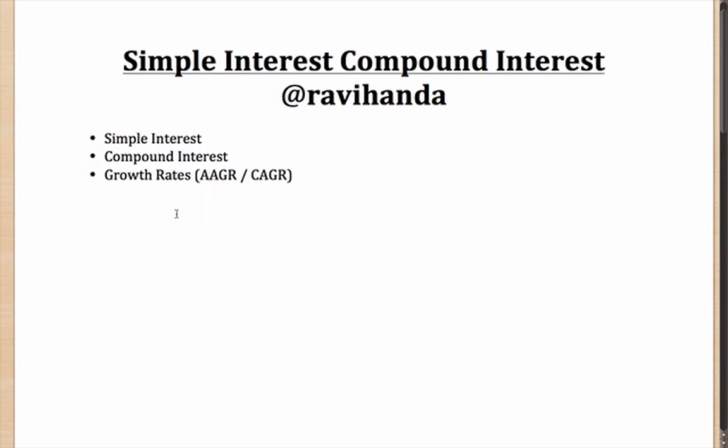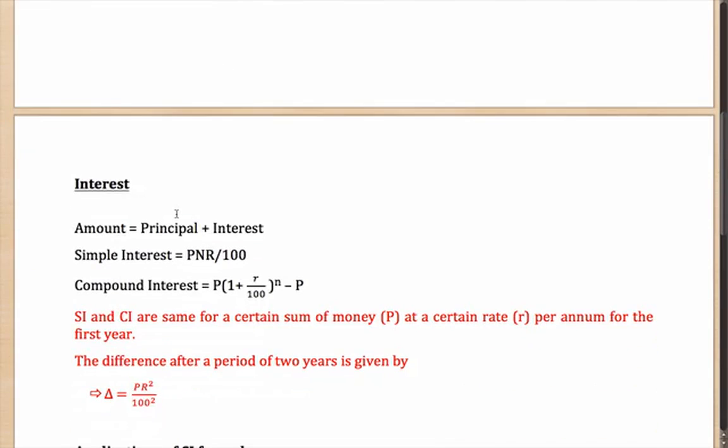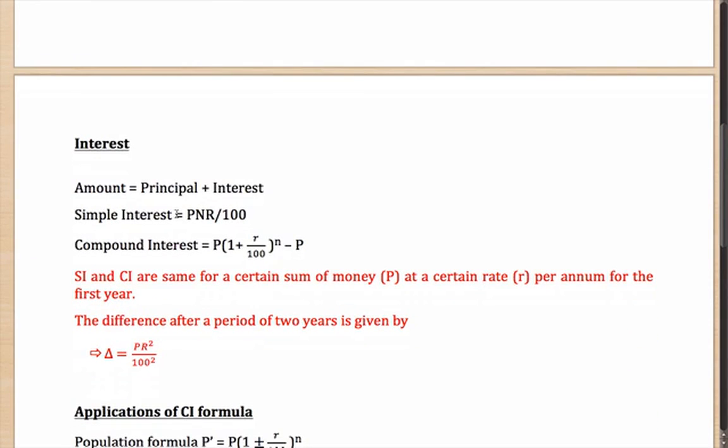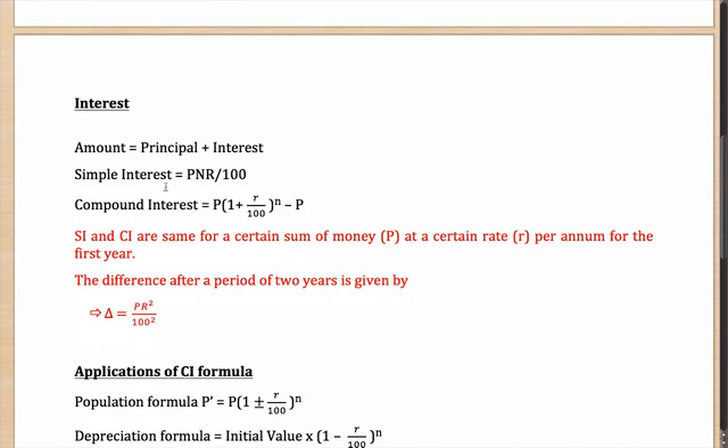The first thing that we need to understand is what exactly is interest. Basically, the amount that you have borrowed or given to someone is known as the principal amount. Then interest gets added to it over a period of time to make the final amount.